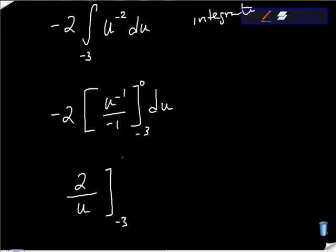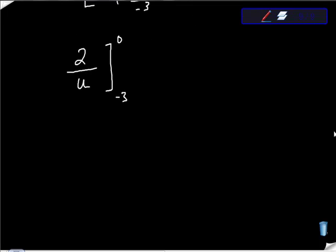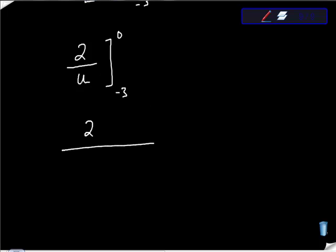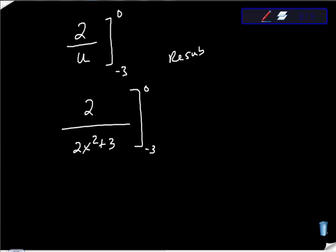So I have 2 over u, evaluate it from -3 to 0. Now I am going to resubstitute. It's 2 over, remember we had that u was equal to 2x² + 3, so I'm resubbing. We're going to declare that we intend to evaluate.